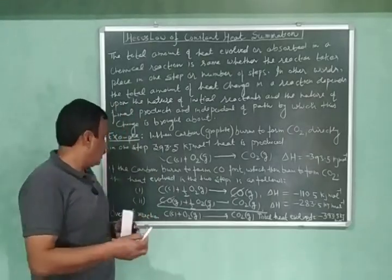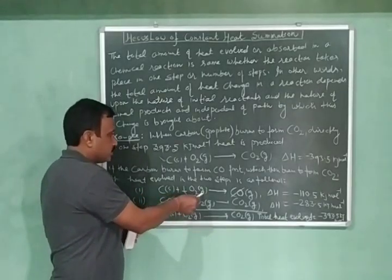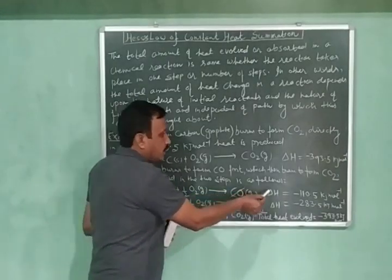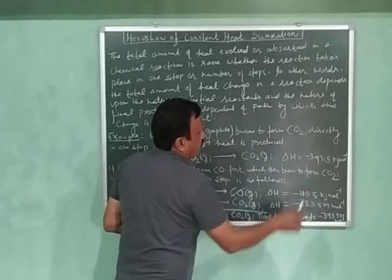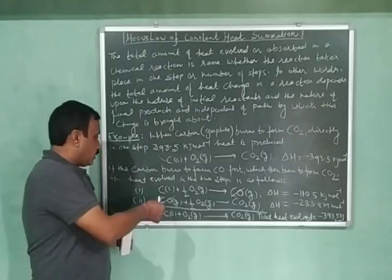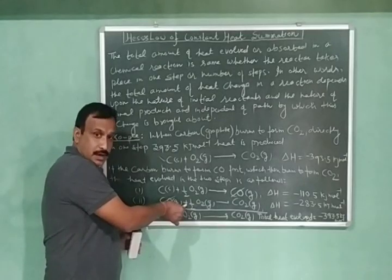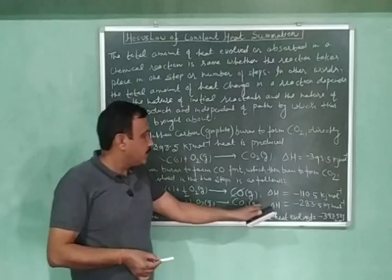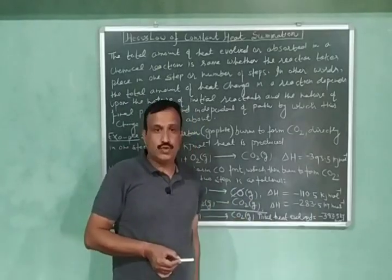So here in the first reaction, one mole of carbon is reacting with half mole of oxygen giving us one mole of carbon monoxide. And the heat liberated during this reaction is equal to minus 110.5 kilojoule per mole. And in the second step, here the one mole of carbon monoxide is reacting with half mole of oxygen and giving us carbon dioxide one mole. And the heat liberated in this reaction is equal to minus 283.5 kilojoule per mole.